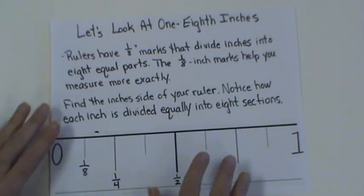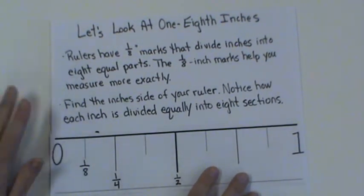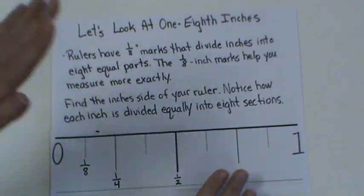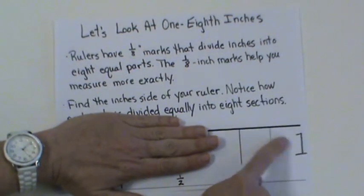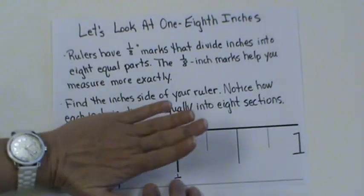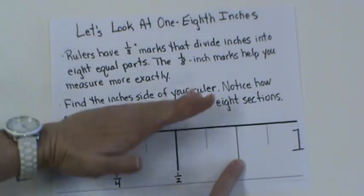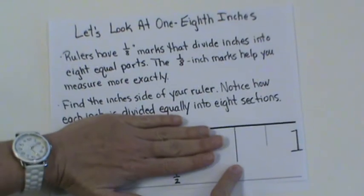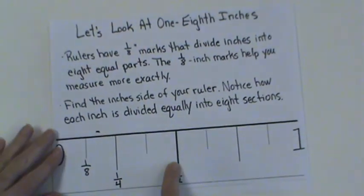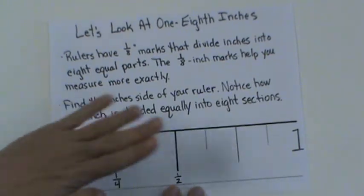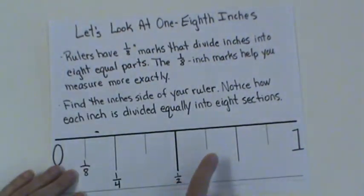This helps you get an even more exact measurement. If it doesn't quite go to the one, we can round it off. So if I put my hand down here, I can see it's not quite this long, so I can bring it back and round it. Obviously, my hand is bigger than an inch, but that gives you an idea of how to use your eighths, fourths, and halves.